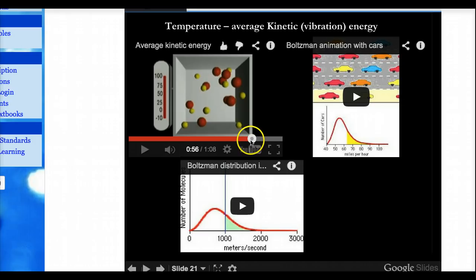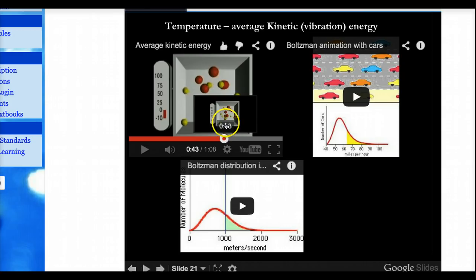This graph shows the distribution of molecular speeds for a particular gas at two different temperatures. Notice that the most probable molecular speed, given by the peak of the curve, increases as the temperature increases. So the idea that I want you to get from this is that, essentially, molecules move at all different speeds, and that's why you can graph these distribution of speeds with a Boltzmann graph. So temperature is just an average.